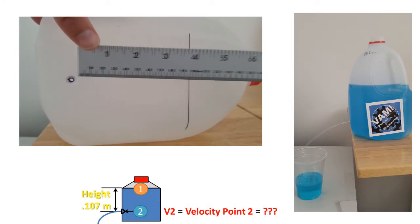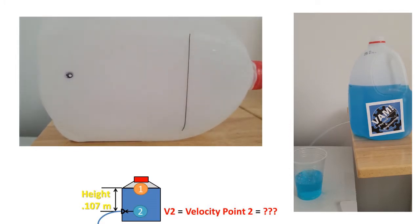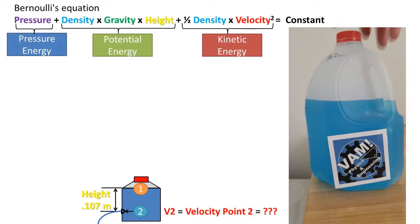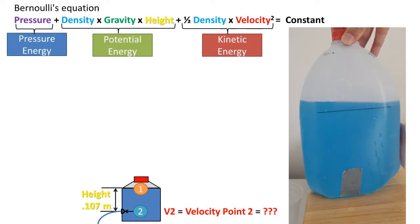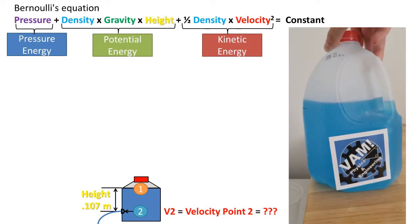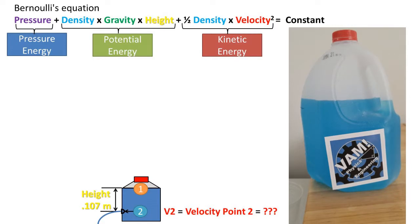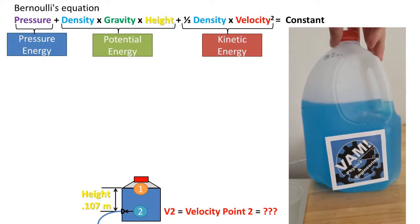We will refer to the top of the waterline as point 1 and the point where the water is coming out of the hole as point 2. We will be using the Bernoulli equation, which is an equation that adds up the pressure energy to the potential energy to the kinetic energy of the fluid to get the total energy in the fluid.